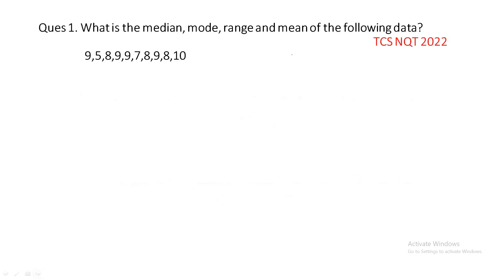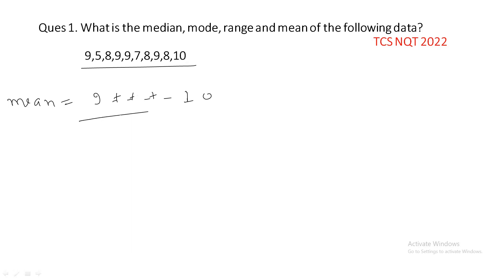The first question is: what is the median, mode, range, and mean of the following data? This is a statistics question, and statistics is one of the most important topics in the TCS iNQT exam. First, we find the mean, which is simply the average. There are total 10 terms, so the mean will be the sum of all terms divided by 10. The sum of all these terms is 82, divided by 10.